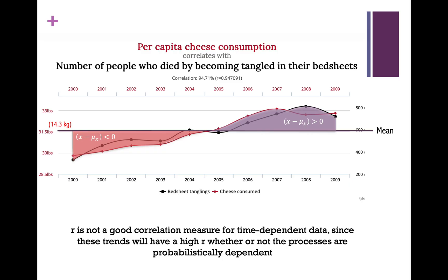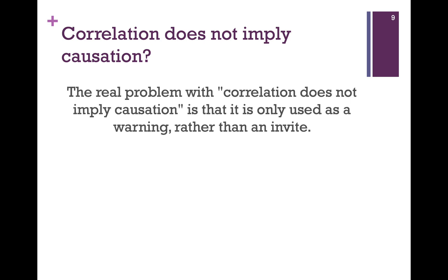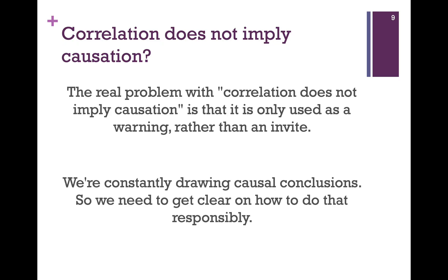People who use time series in their research would not use the R coefficient for cases such as this. So, does correlation imply causation? If by correlation we mean genuine probabilistic dependence, the answer is yes. Many of the examples supposedly showing correlation without causation are in fact cases where there's no such dependence. My reason for being worried about the refrain that correlation does not imply causation isn't just that it's false, but that it's so typically used as a warning rather than an invite — a way to tell people how to avoid drawing causal conclusions rather than how to draw proper causal conclusions. We're always drawing causal conclusions, and it's really important to get clear on how to do that responsibly. That's going to be my aim in the videos that are a part of this series. Thank you for listening.